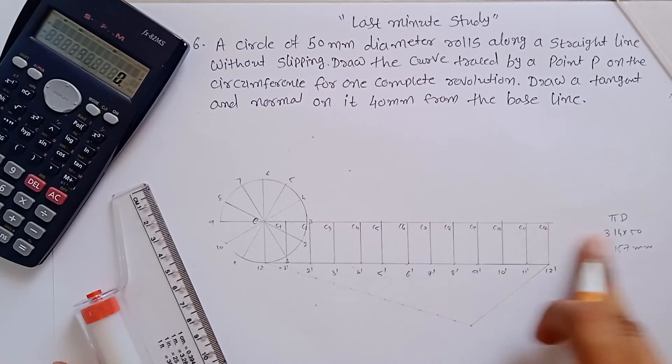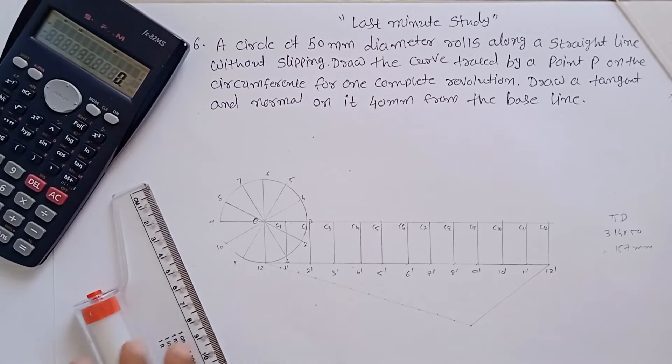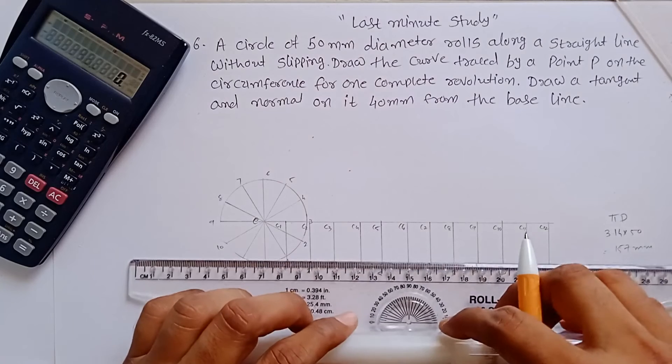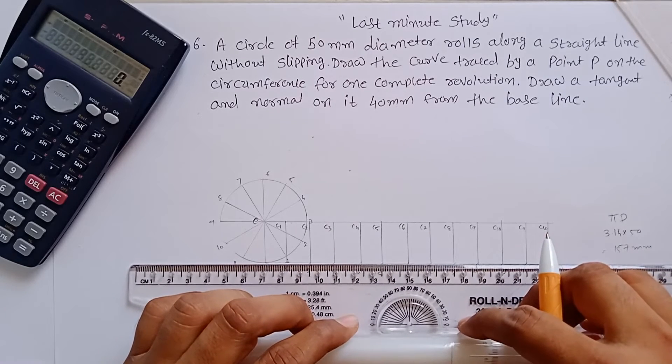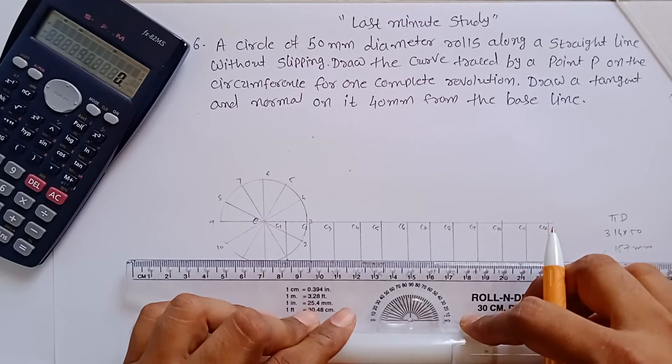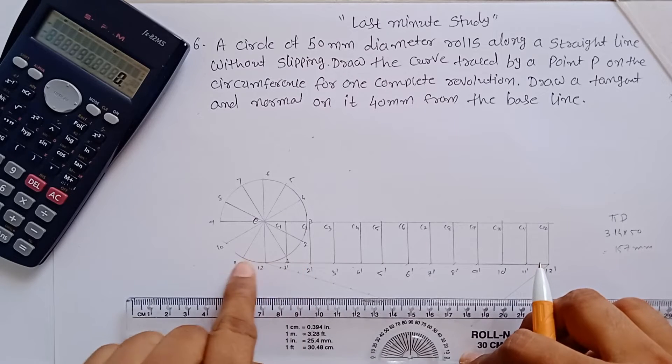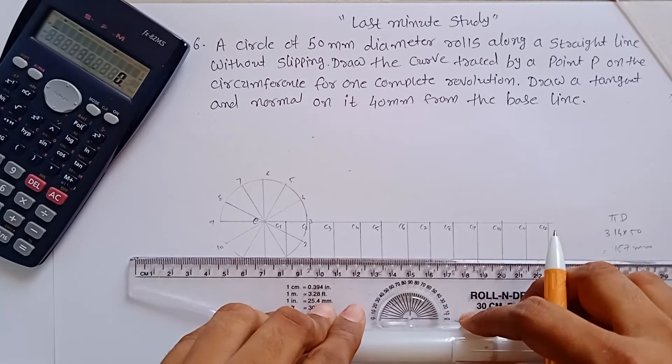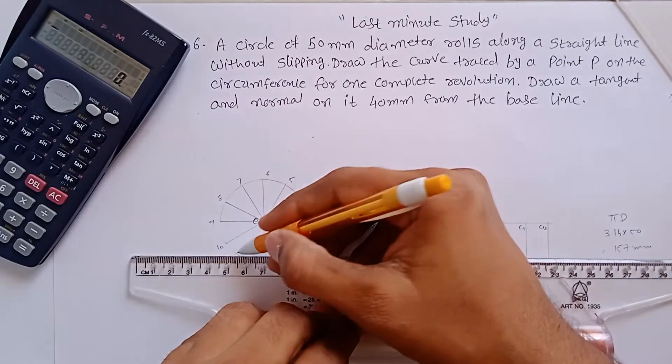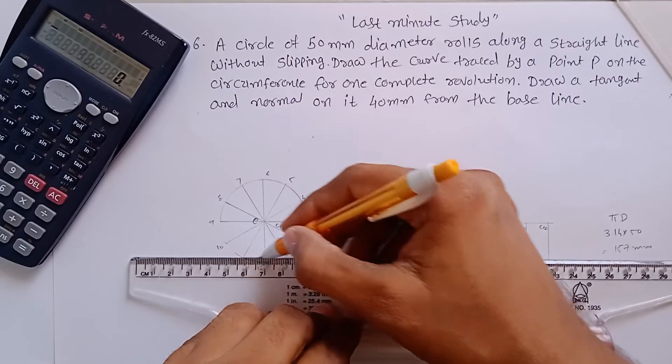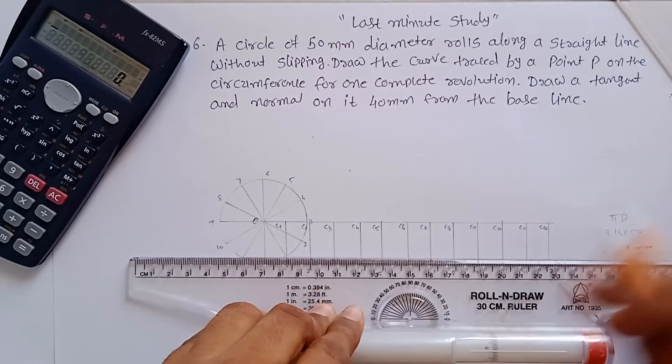Now construct the horizontal lines passing from this 1 and 11 point. These two points must be passing from each other.